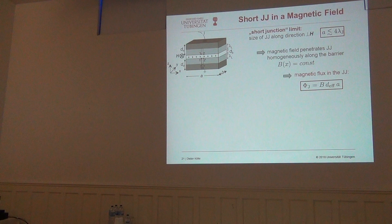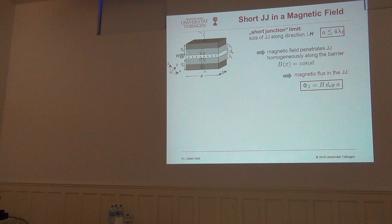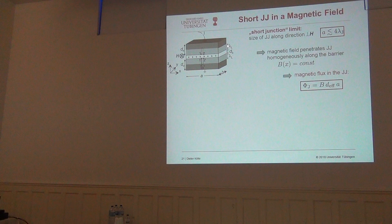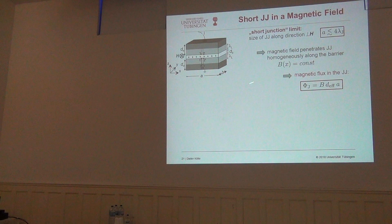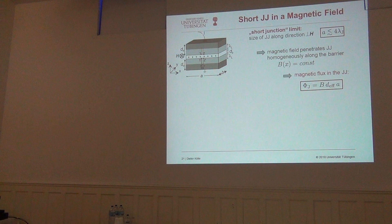If this size is smaller than roughly four times the Josephson penetration depth, the field will fully penetrate in a homogeneous way through your barrier. So you have just a homogeneous induction field penetrating across the barrier. That means B of x is not screened, it's just penetrating through the barrier, but also extending partially up to the London penetration depth into the two electrodes. And that gives you immediately the magnetic flux phi_j in the barrier, which is the magnetic induction B times the magnetic thickness in z direction times the size of your junction along x direction.